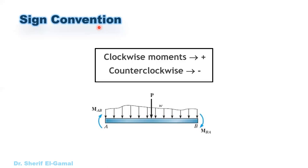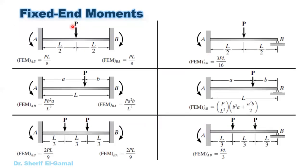Let's see the sign conventions for the moment distribution method. If a moment produces a clockwise rotation — as with MBA and MAB — it is assumed as a positive moment. If it is counterclockwise, it is assumed as a negative moment. This sign convention will be followed throughout. Fixed end moments can be obtained from a fixed end moment table for different loading cases and support conditions, such as fixed-fixed or fixed-pin spans.